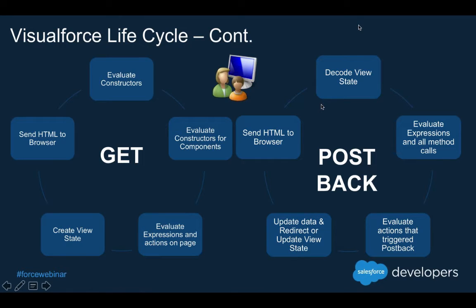The postback request is a little different because it needs to send the view state that has been updated on the client side. It needs to be decoded, so it sends that decoded view state to the controller or the backend server. The server performs the same kind of actions — it evaluates the expressions and method calls, and then evaluates the actions triggered by the postback. For example, if you click a save button, there needs to be a corresponding save action in Apex. It evaluates and performs the actions, updates the data in the database, or if there is a redirect, it redirects the user. If there is no redirect, it sends the updated HTML back to the browser.